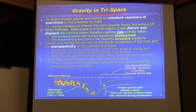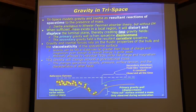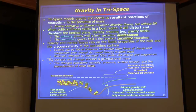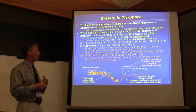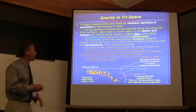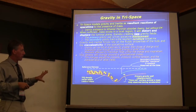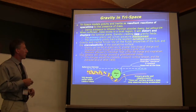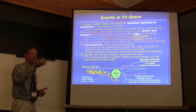Gravity and trispace: trispace models gravity as a resultant reaction of space-time due to the presence of mass — it's a resultant effect, not a cause. Inertia is analogous to Wheeler-Feynman absorber theory without electromagnetism. When sufficient mass exists, it distorts and displaces the luminal realm, creating two kinds of gravity fields: the primary gravity well where space-time is moved out of the way in favor of mass energy — like a boat displacing water — and the secondary gravity field, which is the resultant curvature we see as Newtonian gravity. Gravity and inertial forces rely on the fluidic properties and viscoelasticity of space-time.